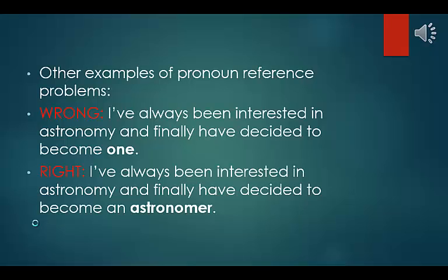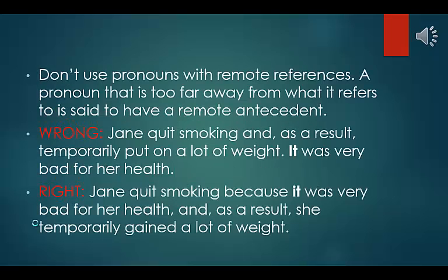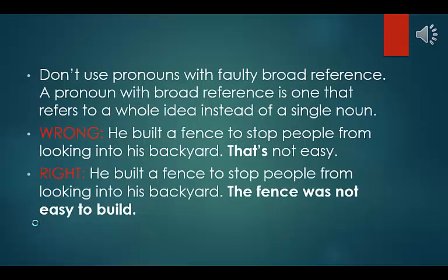Other examples of pronoun reference problems. Wrong: I have always been interested in astronomy, and finally have decided to become one. Right: I have always been interested in astronomy, and finally have decided to become an astronomer. Don't use pronouns with remote references — a pronoun too far from what it refers to has a remote antecedent. Wrong: Jane quit smoking, and as a result, temporarily put on a lot of weight. It was very bad for her health. Right: Jane quit smoking because it was very bad for her health, and as a result, she temporarily gained a lot of weight. Don't use pronouns with faulty broad reference — a pronoun with broad reference refers to a whole idea instead of a single noun. Wrong: he built a fence to stop people from looking into his backyard. That's not easy. Right: he built a fence to stop people from looking into his backyard. The fence was not easy to build.